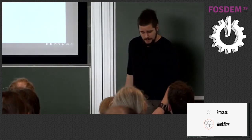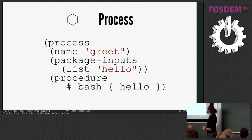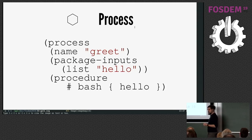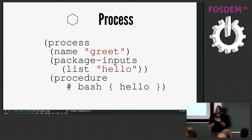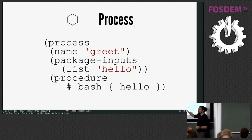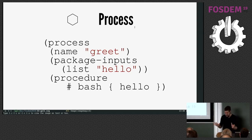Brace yourself — if you're not a schemer, this may look really ugly, but bear with me. In two more slides, these parentheses will disappear. This is a process that has a name, so we can refer to it and invoke it. It has package inputs — this one uses the GNU hello package, whose purpose is to greet you; when you execute it, it says 'hello world.' And the process has a procedure — the way how it is supposed to be executed. This is some syntactic sugar that allows us to run a little shell snippet where we execute hello.